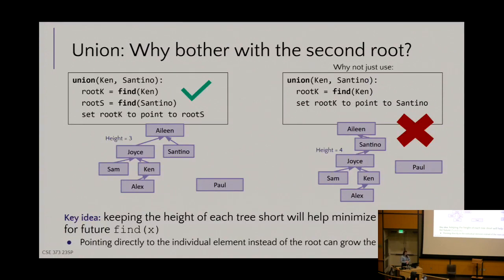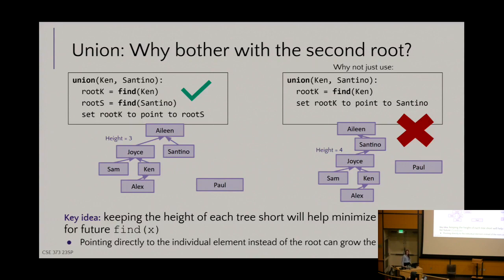Why do we bother finding both roots? If I didn't find both roots, I could theoretically still combine everything — for example, making Joyce point directly to Santino rather than his root Eileen. I'd save an extra find, but the height of the tree would grow. That's why I always find the representative of both and point one representative at the other, rather than dealing with child nodes further down. My goal is to push all changes as far up the tree as possible.